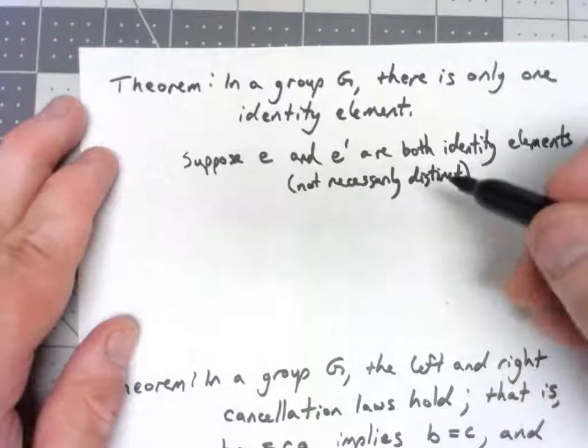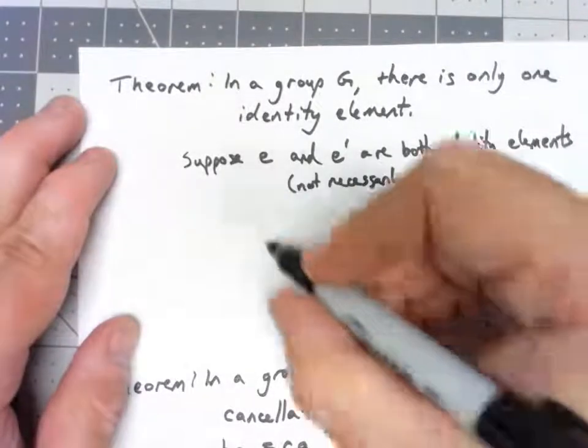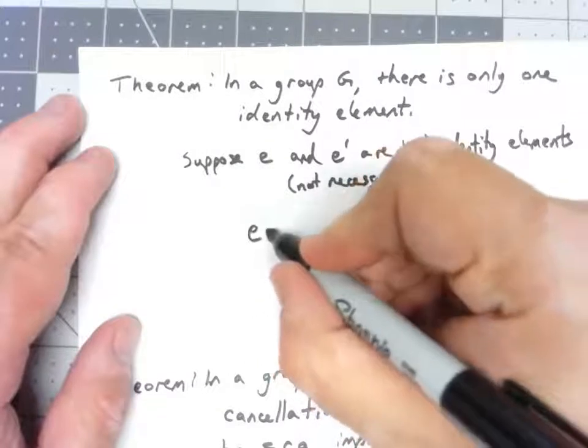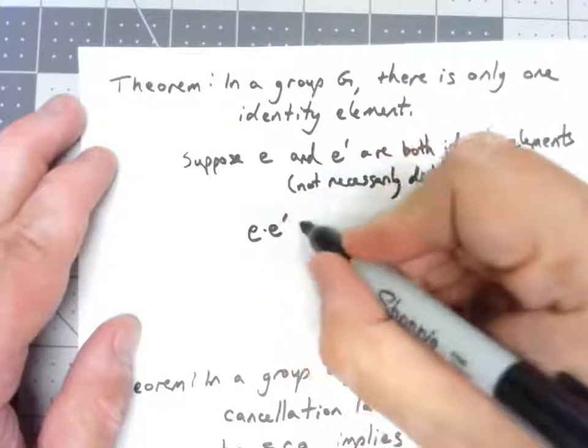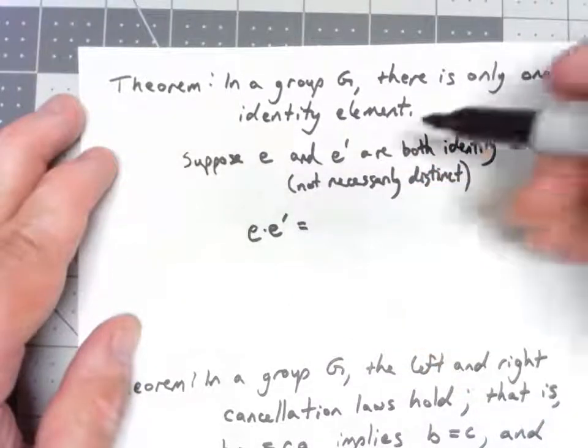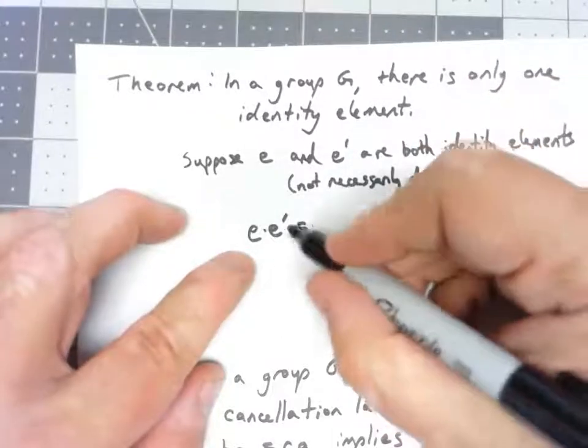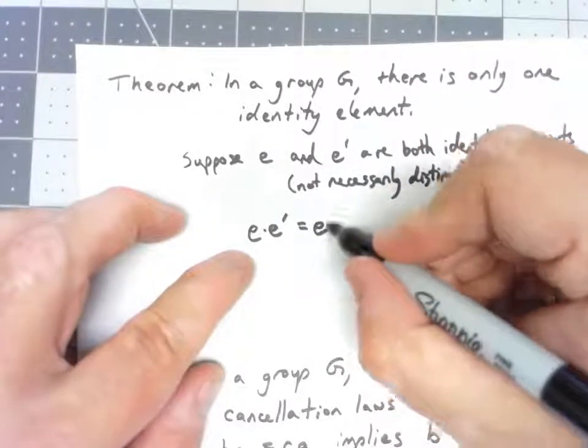Well, let's think about that. If E and E' are both identity elements, what is E times E'? Well, E is an identity element, so whenever you multiply on the left by an identity element, you get the other thing. So that has to be E'.